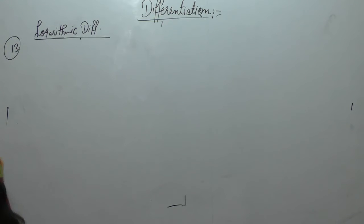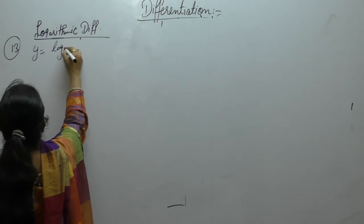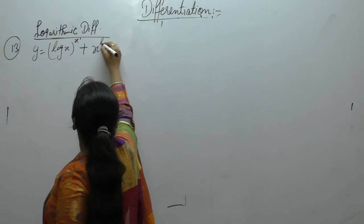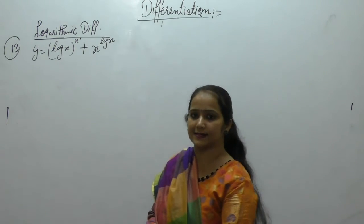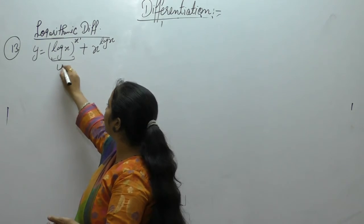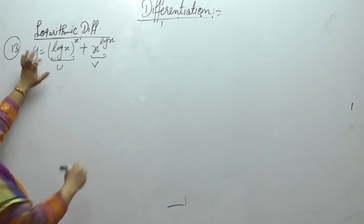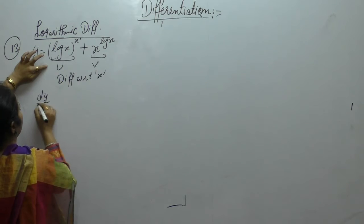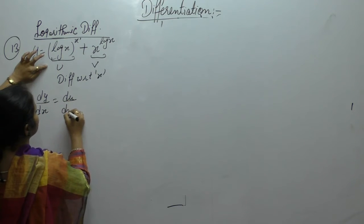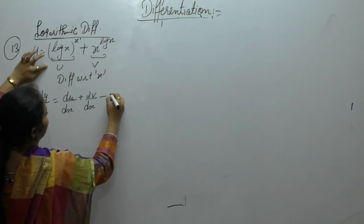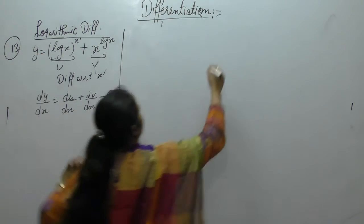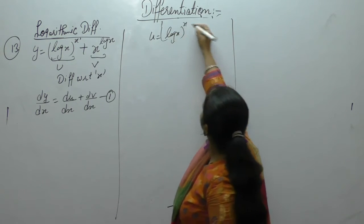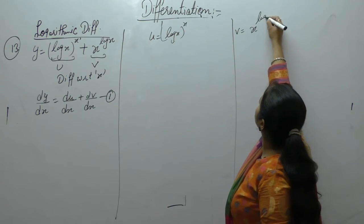Next one is y = log(x)^x + x^log(x), find dy/dx. Here again there is addition, so let u = log(x)^x and v = x^log(x). Then dy/dx = du/dx + dv/dx. Let this as equation 1. Now what is the value of u and v?